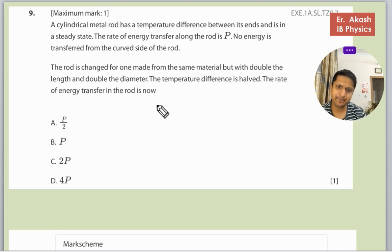Basically, there was one rod like this and now this rod has been made like this. So length was L, diameter was D, and here the length is double and diameter is double.